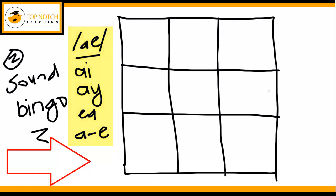They've also learnt the EA spelling and the split spelling of the A sound. So with Sound Bingo, get your students to draw a 3x3 grid. And then before you actually start the game, get your students to tell you the different spellings that they've learnt for the sound to remind them. And then they need to select one of the spellings for each square.